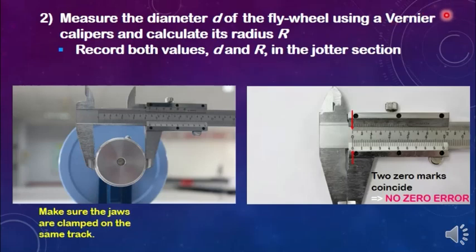Procedure 2: measure the diameter of the flywheel using a vernier caliper and calculate its radius r. Record both values d and r in the data section.